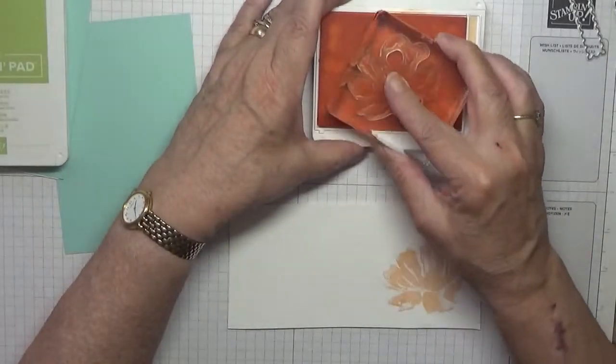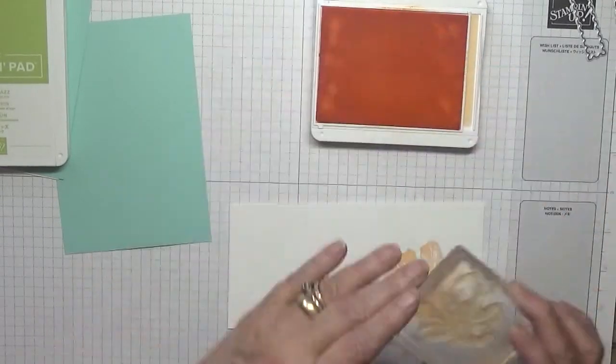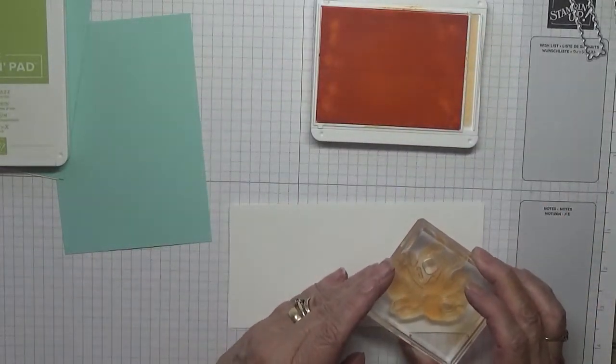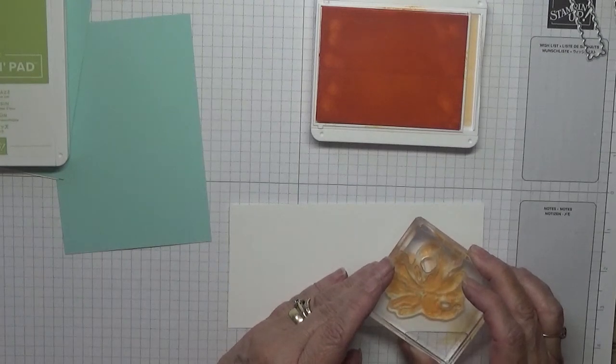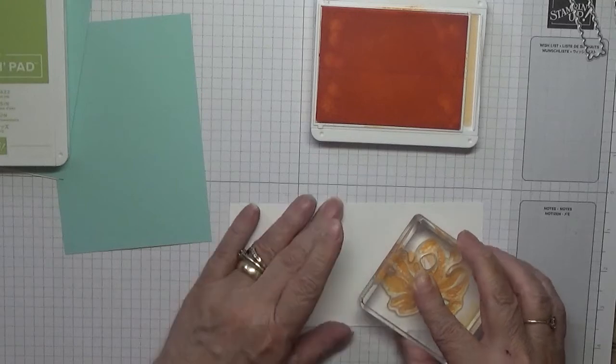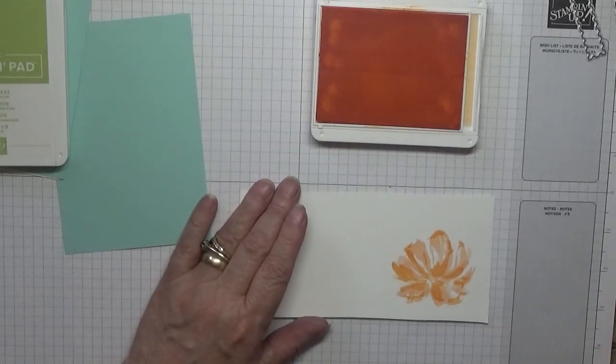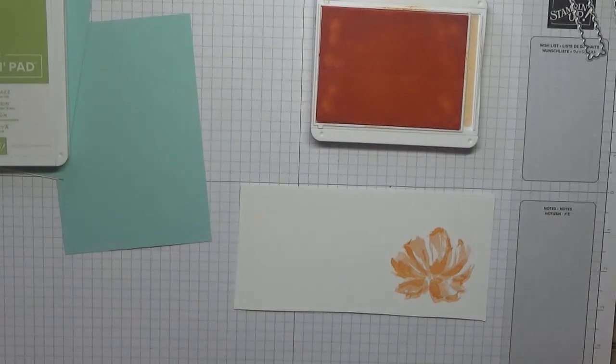And then with Pale Papaya we stamped our second layer. Stamp it up really well and stamp that down there like that. That's our second layer stamp.